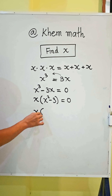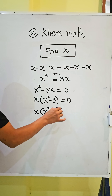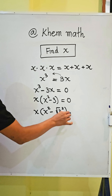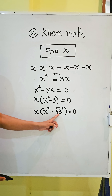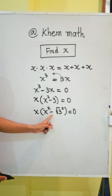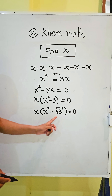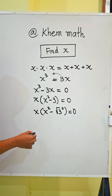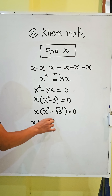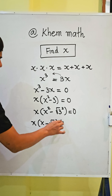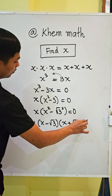Here, we write x times x squared minus square root 3 squared equals 0. We apply the difference of squares formula: a squared minus b squared equals a minus b times a plus b. So we get x times x minus square root 3 times x plus square root 3 equals 0.